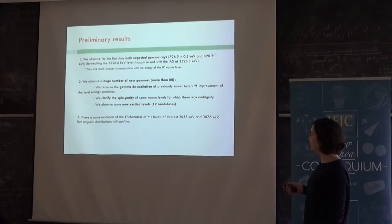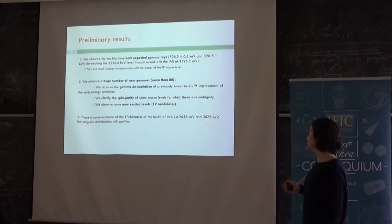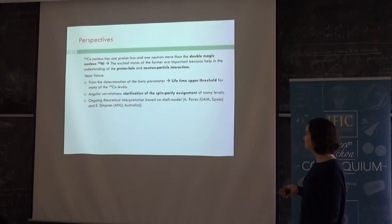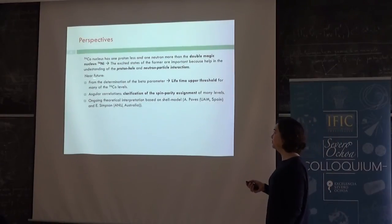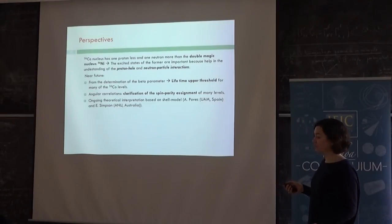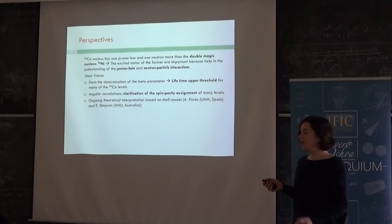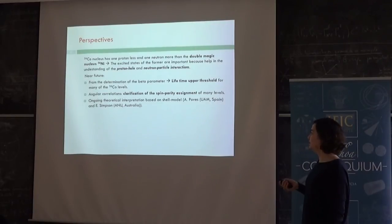There is also evidence of the 1+ character of the levels of the Osaka experiment that we wanted to confirm, but we still have not done the angular distribution study. So this will be confirmed later. And the level scheme is under construction. So for the future, for example, as I said in the first slide, 56-cobalt, because it has one proton less and one neutron more than the double magic of 56-nickel, this is important in order to understand the proton hole and neutron particle interactions.